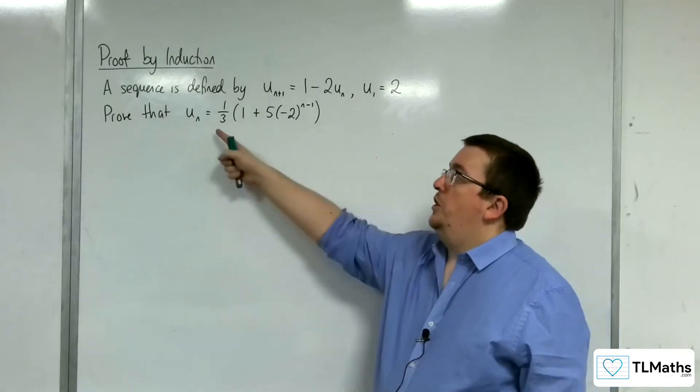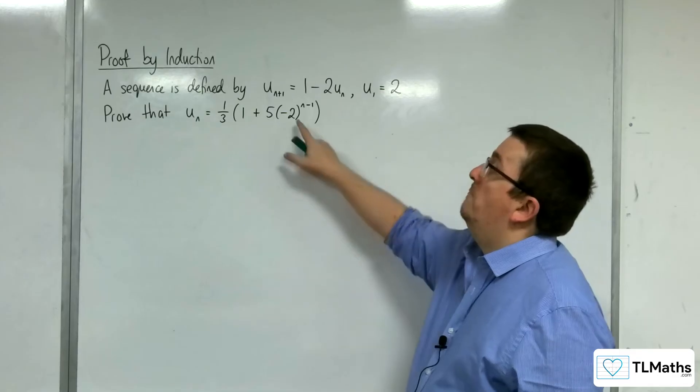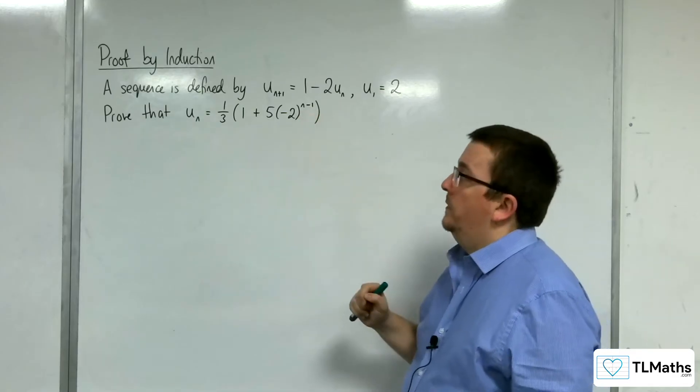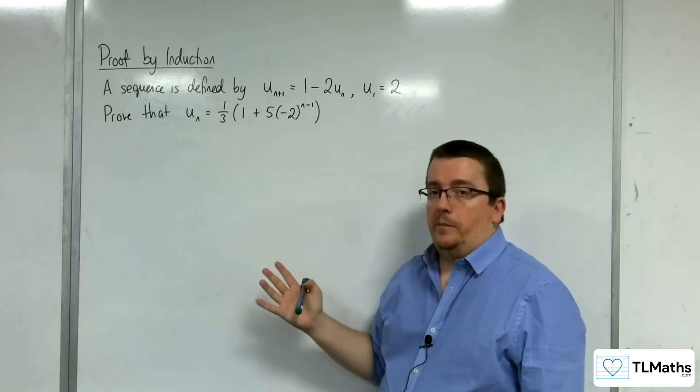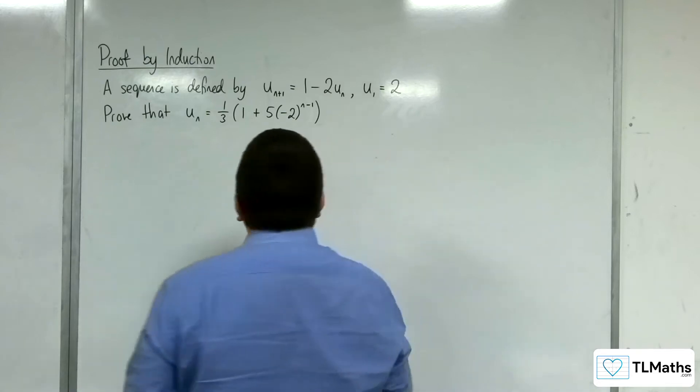Prove that u_n = (1/3)(1 + 5(-2)^{n-1}). So this is the nth term of the sequence.